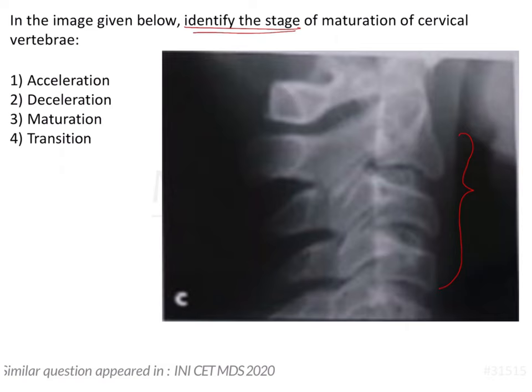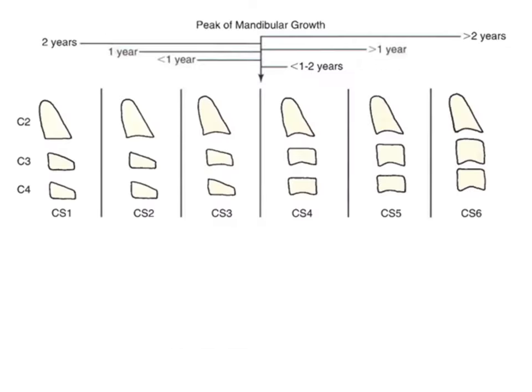Let's have a look at the different stages of cervical vertebrae maturation. They can ask you to correlate the peak of mandibular growth with the cervical vertebrae maturation. This is a very important table to know because the timing of the peak of mandibular growth and the different stages has been correlated here.